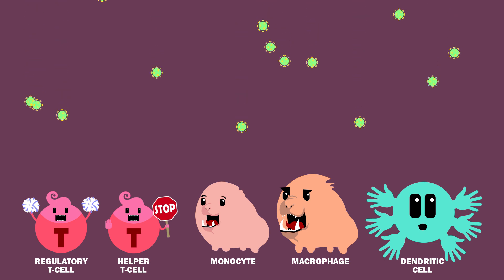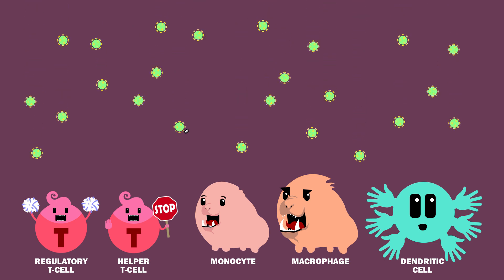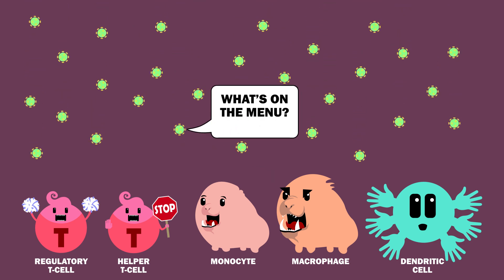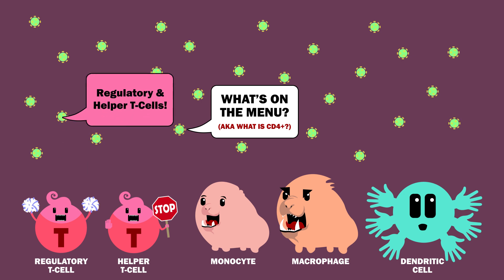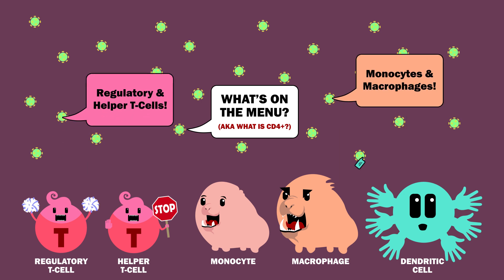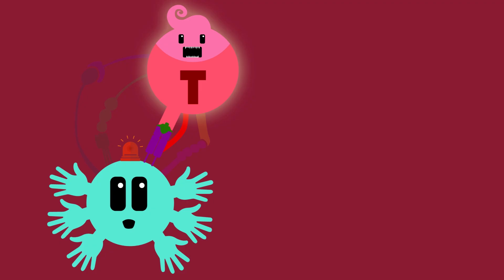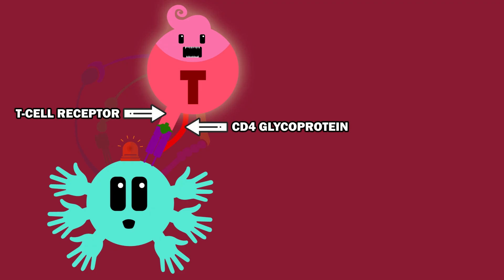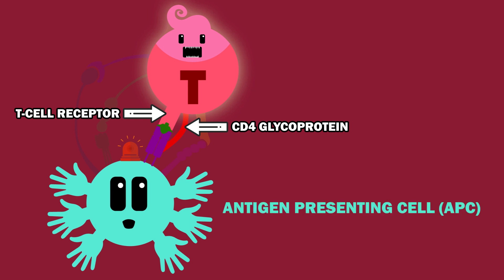HIV targets CD4-positive cells — in other words, cells that bear the CD4 glycoprotein on their membrane, such as regulatory and helper T-cells, monocytes, macrophages, and dendritic cells. CD4 is a co-receptor of the T-cell receptor, allowing T-cells to communicate with antigen-presenting cells, such as dendritic cells.